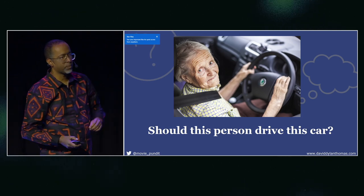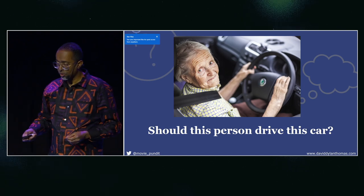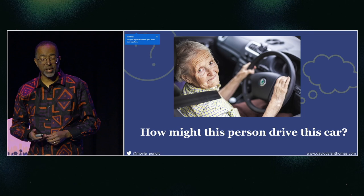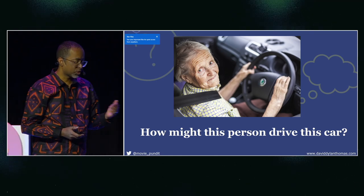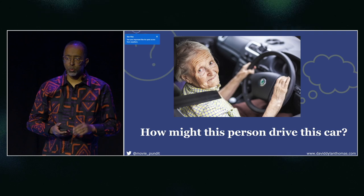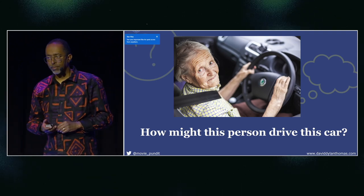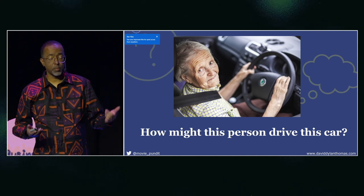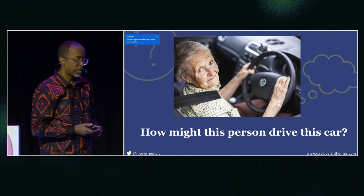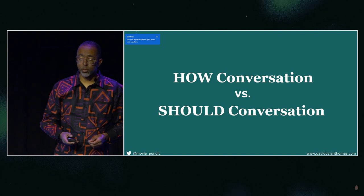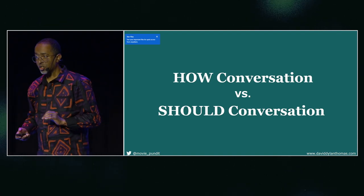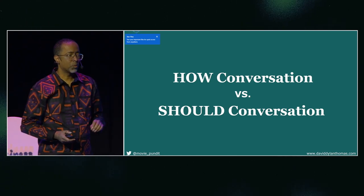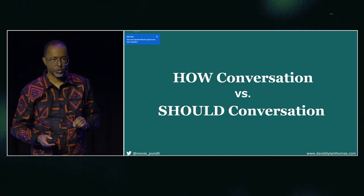If you show the exact same photo to another audience and ask, 'How might this person drive this car?' you get basically a design discussion. Some people will say, what if we change the shape of the steering wheel, or what if we move the dashboard? You'll learn several different ways that person might be able to drive that car. Online and in person, we've gotten very good at the 'should' conversation, but not so good at the 'how' conversation.